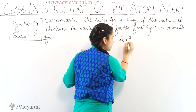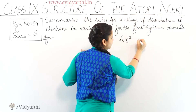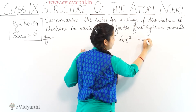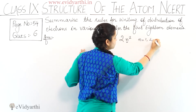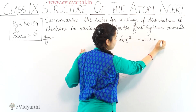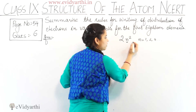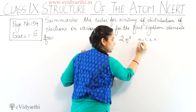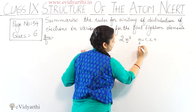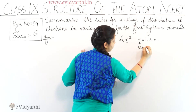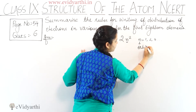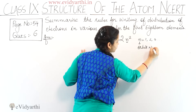This n can be 1, 2, or 3. And what is n? n is the orbit number — n is the orbit number.